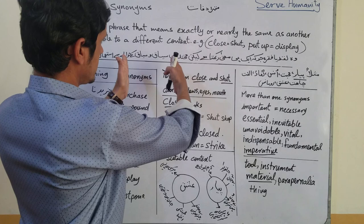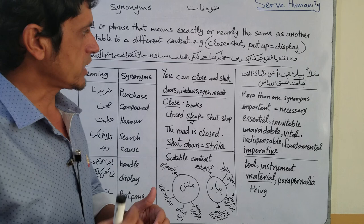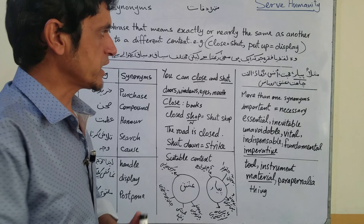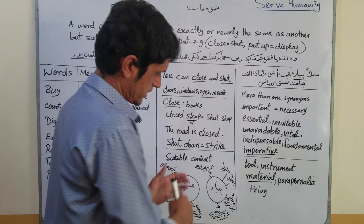Ab main is ki wazaahat karta hoon. Mana aik rakhta hai, lekin siyaaq-o-sabaaq ke hawalay se mukhtalif uska istemaal hota hai. Is mein aik bunyaadi falsafa hai jis ko hum ne English mein parha hai — social linguistics mein — aur jis ko kaha jaata hai: the concept of semantic network.